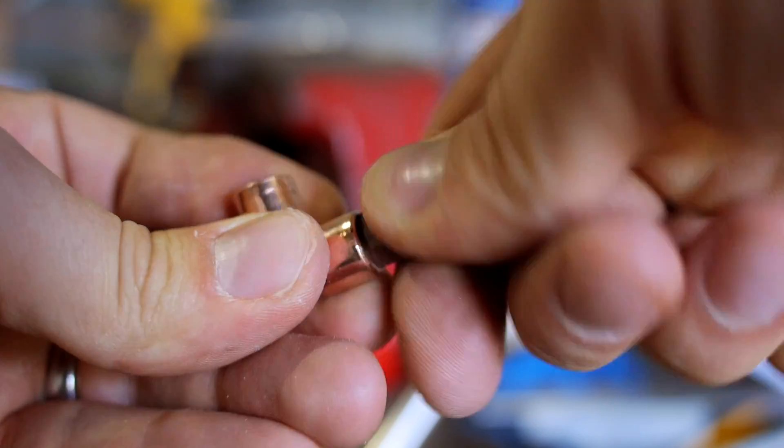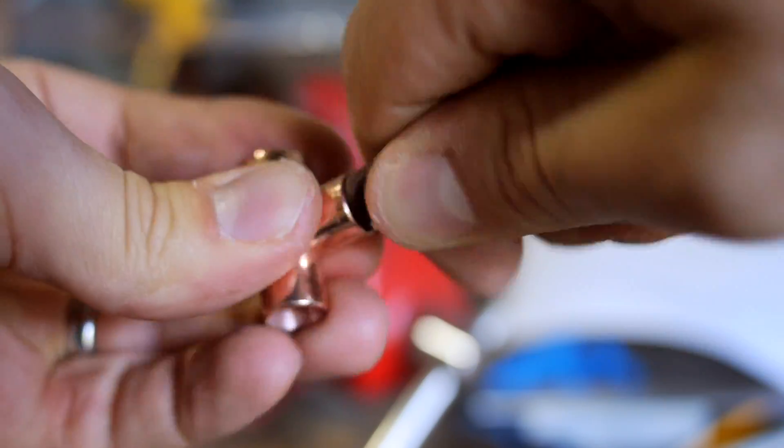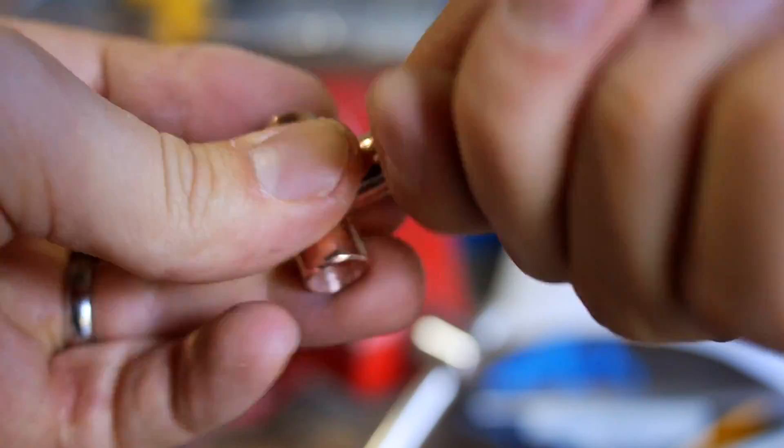For fittings such as this T-fitting, I like to clean up all of the junctions that are going to be soldered. That way it saves a little bit of time when you come to flux and solder it. You don't have to go back and re-clean.